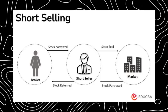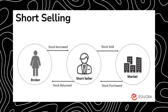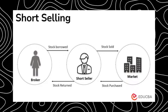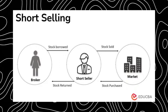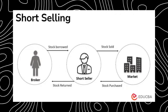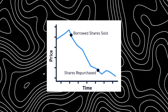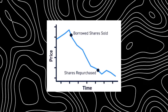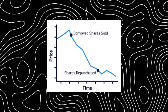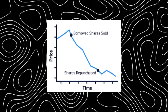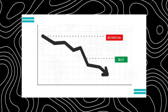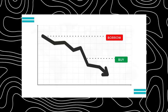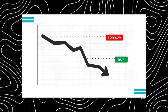Short selling: a strategy used by investors who believe a stock price will decline. This involves borrowing shares to sell at the current price, hoping to buy them back later at a lower price for profit. To close a short position, a trader repurchases the shares at a hopefully lower price and returns them to the lender or broker. While it can be lucrative, it's risky because if the stock price rises, losses can be much greater. A popular example of short selling was during the 2008 recession — as depicted in the movie 'The Big Short.'